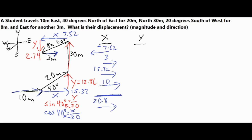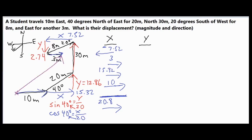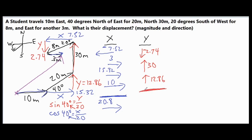Now I'll do the same with vertical vectors. I have 2.74 going down, the large 30-meter vector going up, and 12.86 going upward. Calling upward positive and downward negative: 30 plus 12.86 equals 42.86, minus 2.74 gives a final net vertical vector of 40.12 meters upward.